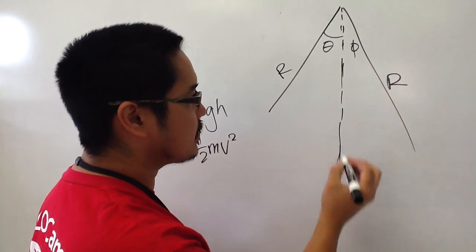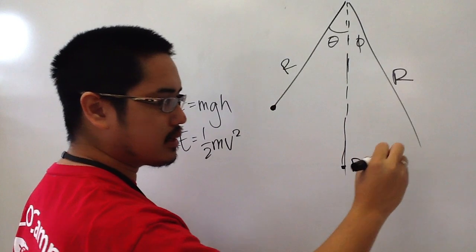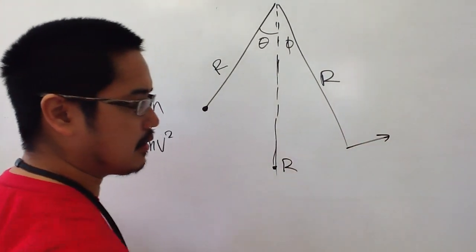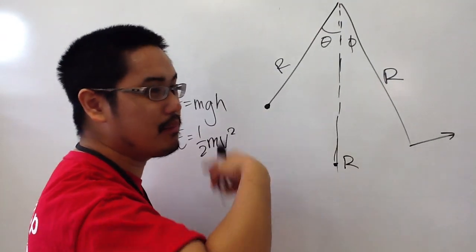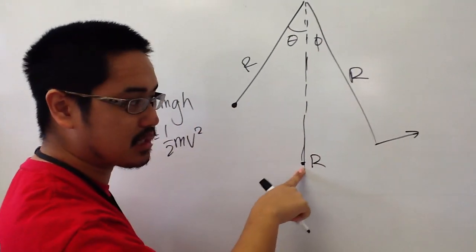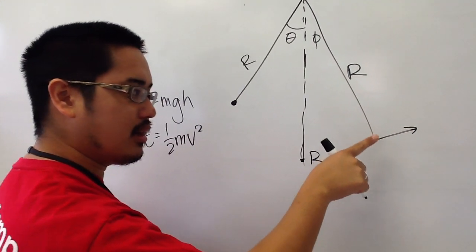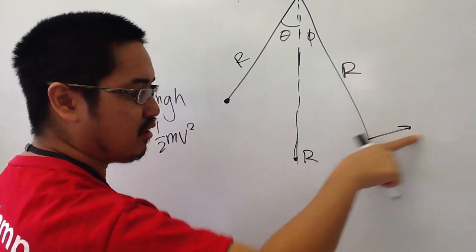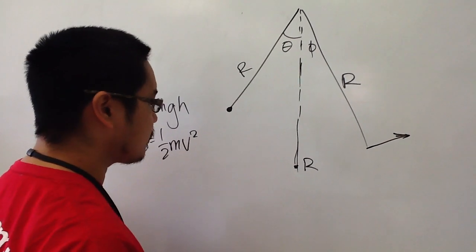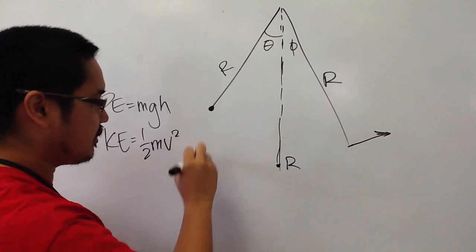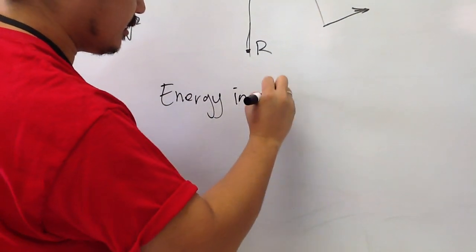All right. So essentially what I'm saying here is all of the potential energy here translates to kinetic energy over here. Because when you go down, you're going to not have any kinetic energy, you're not going to be moving. Then you're going to go and speed up, and you're going to have maximum kinetic energy. And then some of that kinetic energy is going to be lost. But when you let go, all of that kinetic energy that you have really comes from the potential energy over here. So essentially what we need to do is we need to say all of the energy in the beginning equals energy out.